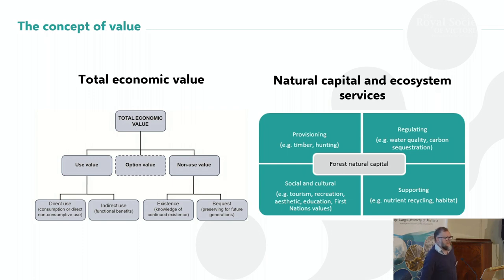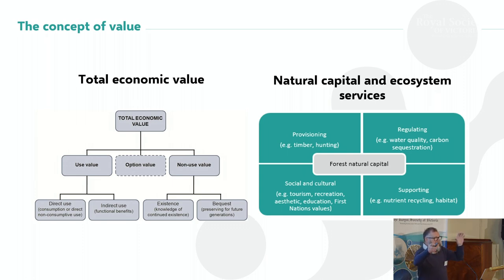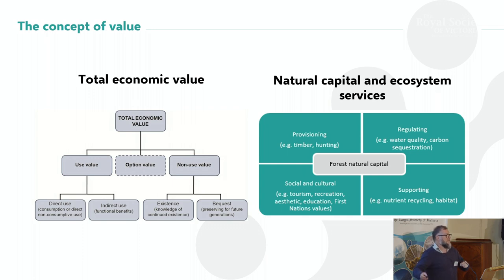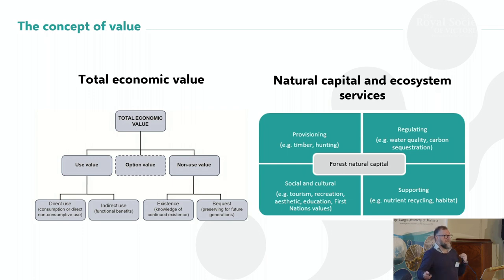Traditionally we have a total economic value framework. Economists are like accountants that do calculus — we like to put things in boxes. We value this, we value that, and sometimes it's useful and sometimes it's not. A lot of the work our group does is partnering with biophysical scientists, social scientists, engineers, and other disciplines, and we need to work out how to join the dots — how do we actually start thinking across disciplines?